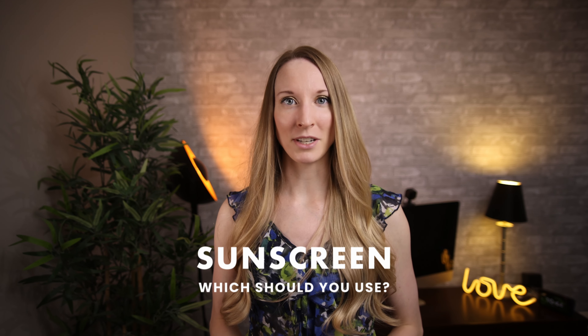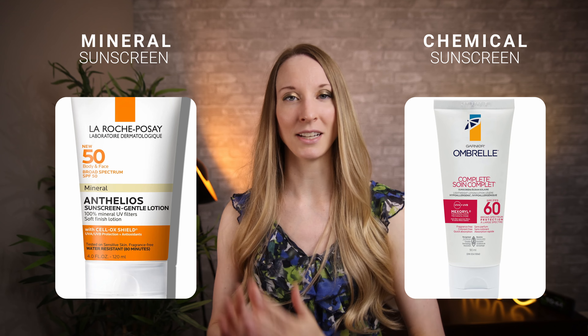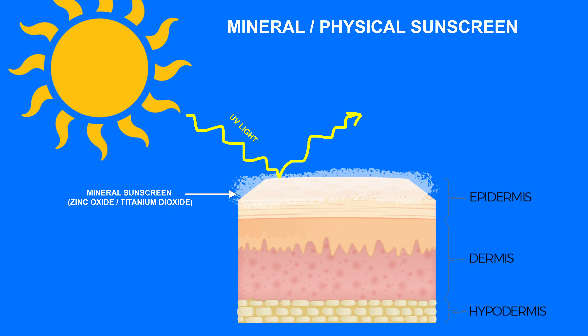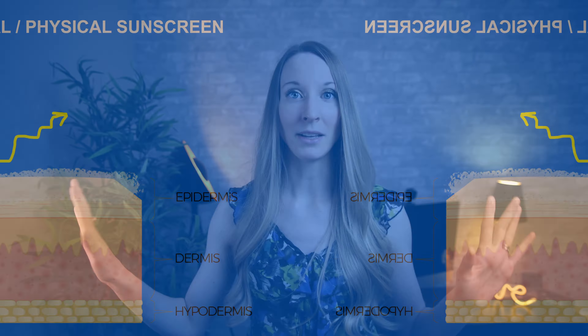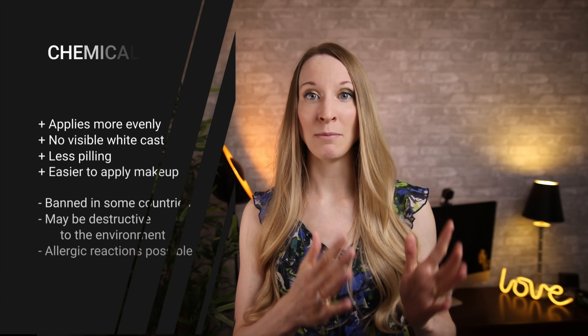Now let's talk about choosing sunscreens. There are two types: chemical sunscreens and physical or inorganic sunscreens. Chemical sunscreens contain ingredients like oxybenzone, avobenzone, octocrylene, and Mexoryl XL. They work by absorbing UV rays and converting that energy into heat, which is released into the surrounding skin or atmosphere. Inorganic or physical sunscreens work by forming a film on the skin surface and reflecting light away from the body. Common physical sunscreen ingredients include zinc oxide and titanium dioxide.